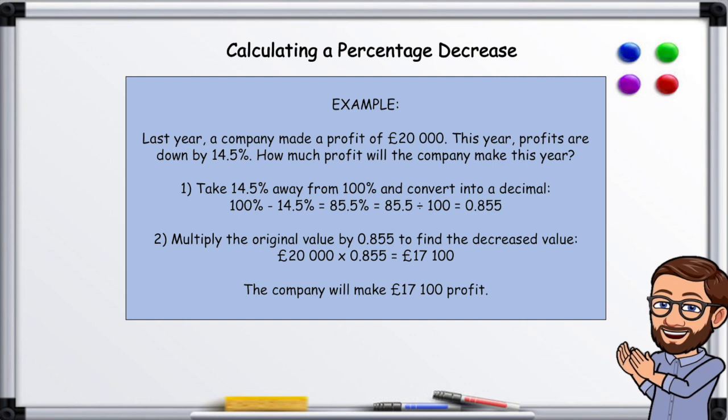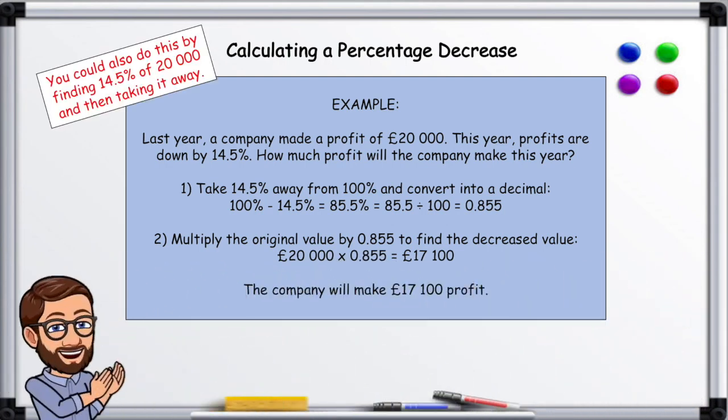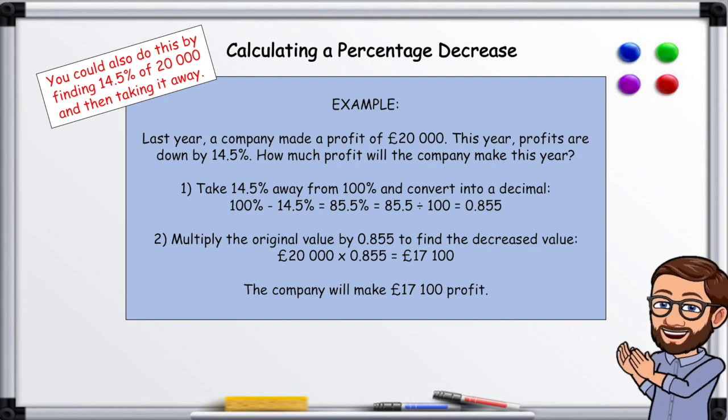You could also do this by finding 14.5% of 20,000 and then take it away. That's a more traditional way to do it - so 10% of 20,000, then you find 1% of 20,000, you add those up and then you take that away. But this way is a lot easier, especially for a calculator question. You just use your calculator to multiply by the decimal that you've come up with.